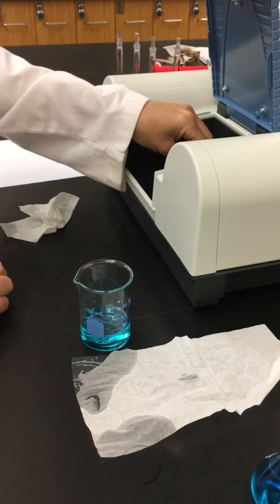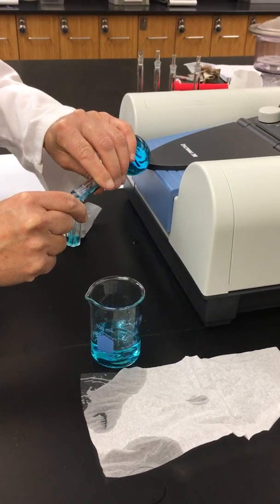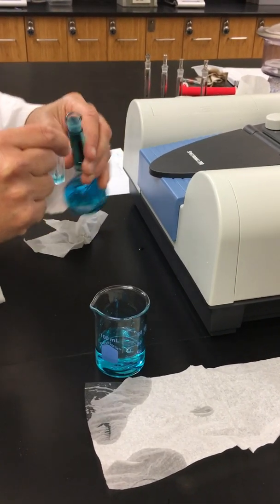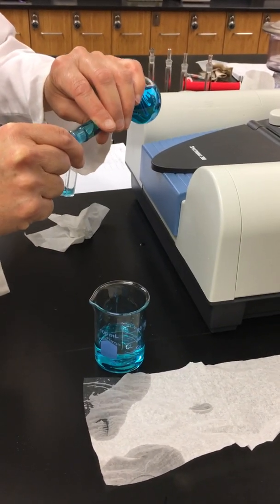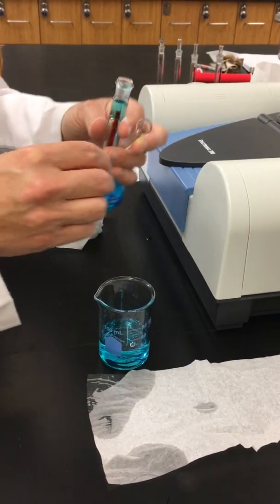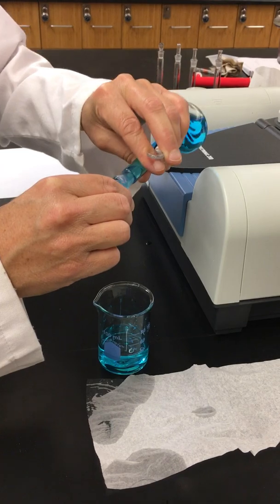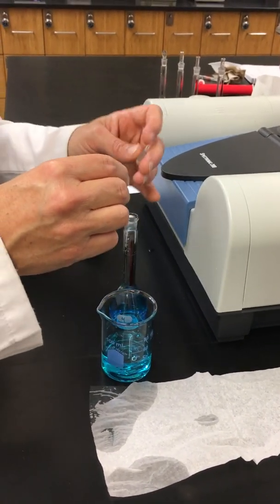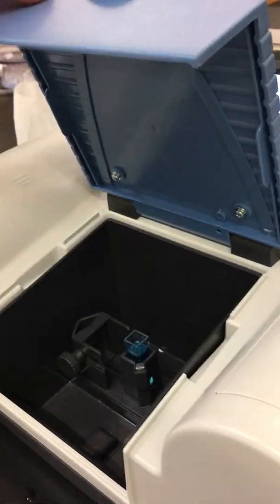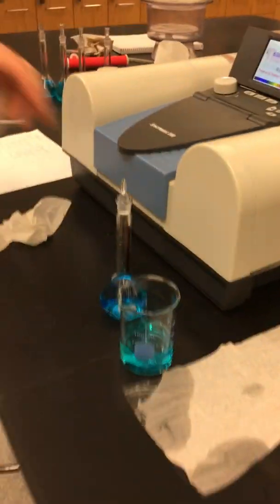Now we're ready to do our last dilution. We're doing solution number five. Following our same procedure, we'll rinse it out first. Sometimes it creates a little vacuum around that neck of the volumetric flask. And we're ready to do our last dilution. Solution number five has an absorbance of 0.99. So we've now done the five dilutions.